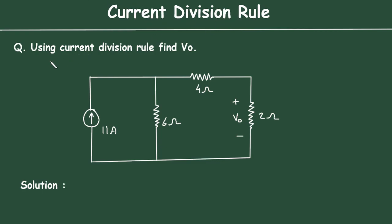Current division rule question. Using current division rule, find VO. Here in this circuit, we have to find VO by using current division rule.